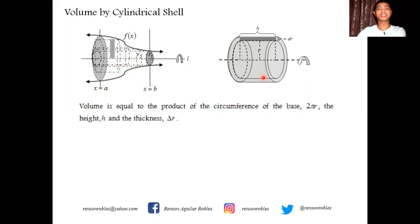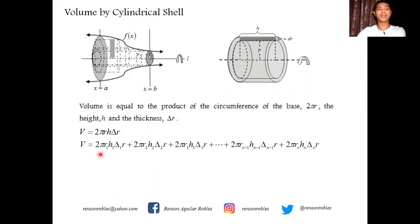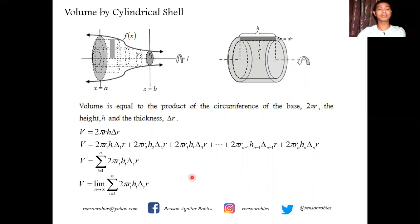We define the volume to be the product of the circumference of the base, that's 2πr, the height h, and the thickness Δr, which equals dr. So the volume is given by 2πr·h·Δr. Since the entire region can be divided into infinitely many cylinders, we write this volume as 2πr₁h₁Δ₁r + 2πr₂h₂Δ₂r, continuing to the nth element. In summation notation, this is the Riemann sum: Σ 2πrᵢhᵢΔᵢr for i = 1 to n. When we take a very small norm Δr approaching 0, we can use infinitely many cylinders as n approaches infinity.